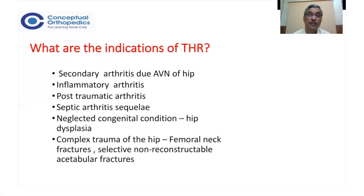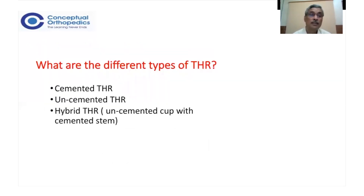Now, what are the different types of THR? When Sir John Charnley started with total hip replacement, it was almost always cemented. In the early 60s, 70s, and probably up to the mid-80s, it was the era of cemented total hip arthroplasty. Subsequently, because of certain issues, uncemented designs came into the market.